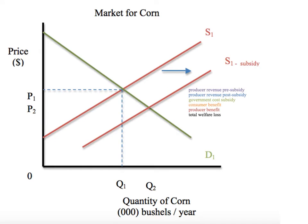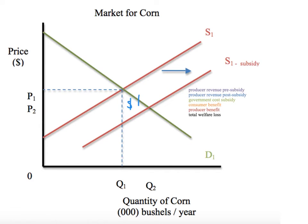Here we have the subsidy diagram after the shift as a result of the subsidy being given to corn producers. It's a $1 subsidy, so the supply curve is moved out by $1. These are the stories we need to find in this graph. We shifted the supply curve outward, and as a result we originally had P1, Q1 — the original equilibrium price. So you can think about this as the pre-subsidy revenue for producers. But hold on, I'm getting ahead of myself.